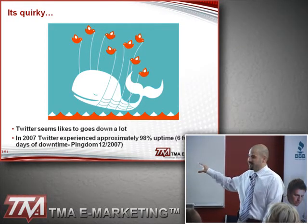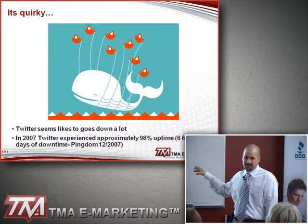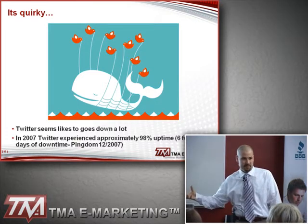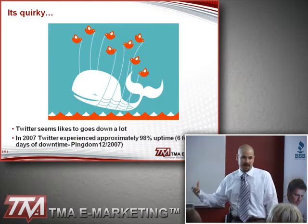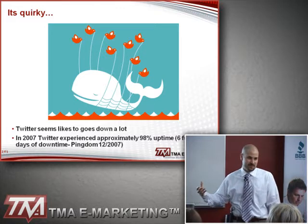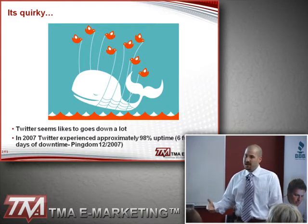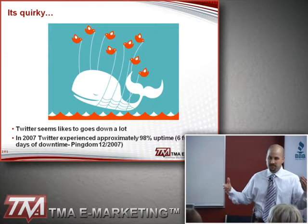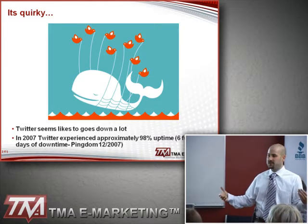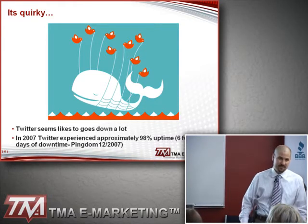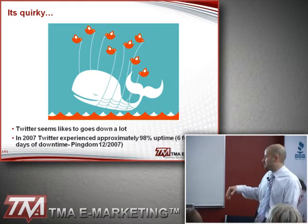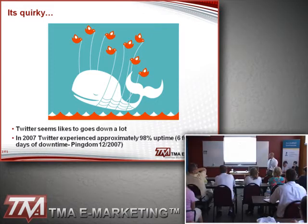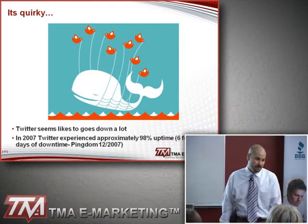I think it's gotten a lot better now. One of the arguments the Twitter people have made is that they haven't monetized it yet because they're still working out the kinks. There will be days, especially between 9 to 5, that you'll get frustrated because you can't post or read or send something. In 2007, Twitter experienced approximately 98% uptime — that's six days of full downtime.